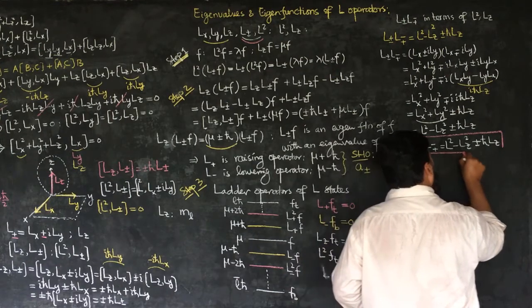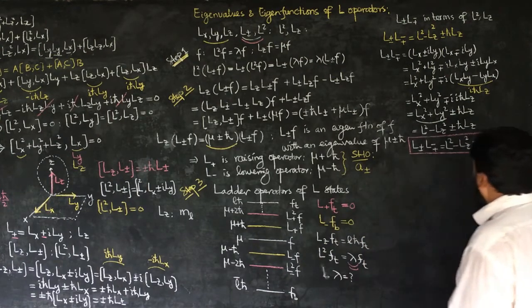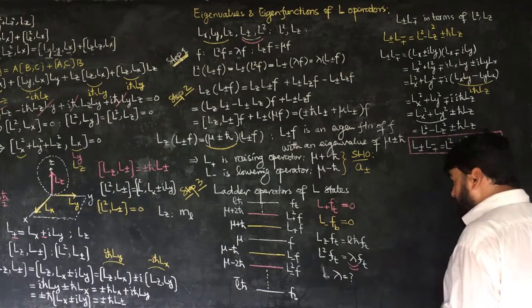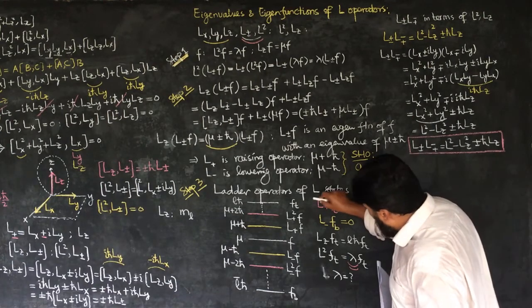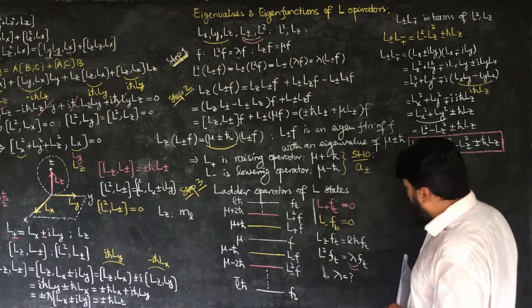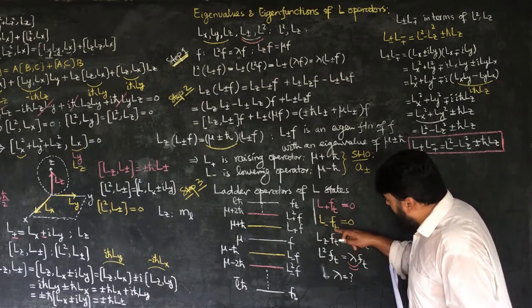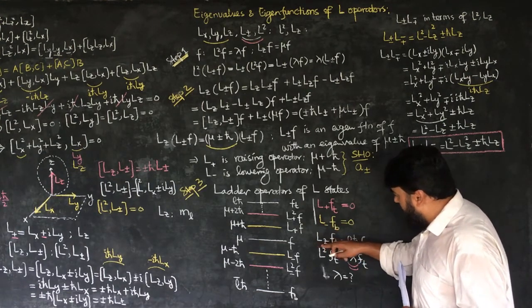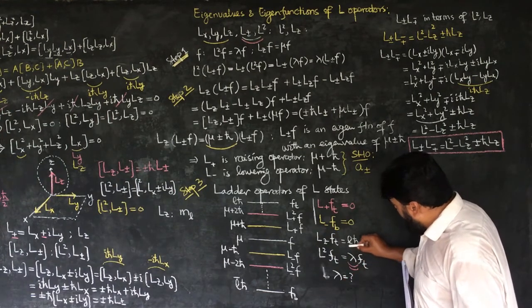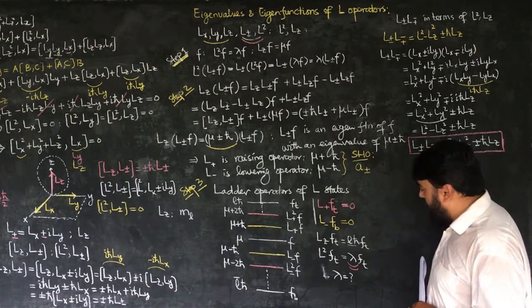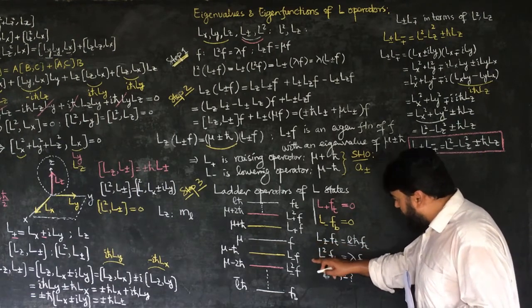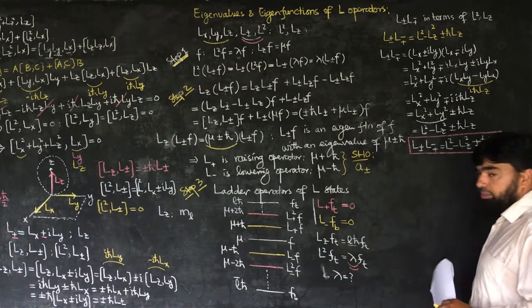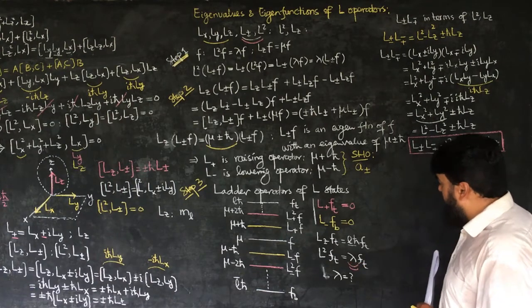Why we were after this relation will become clear now. We already found that applying Lz on the top rung gives eigenvalue Lℏ, but we still need to find what L² gives when applied to the top rung — that is, we need to find lambda.